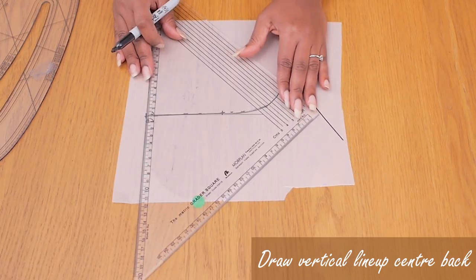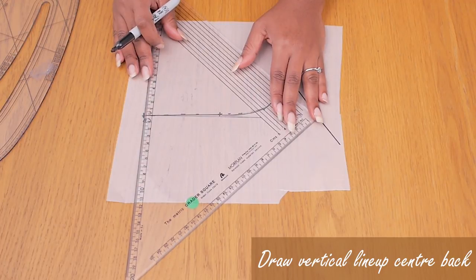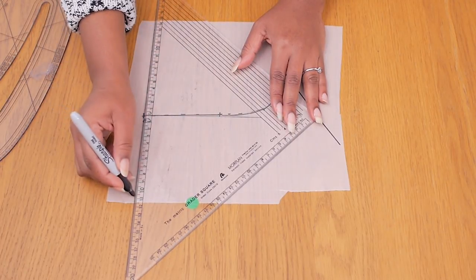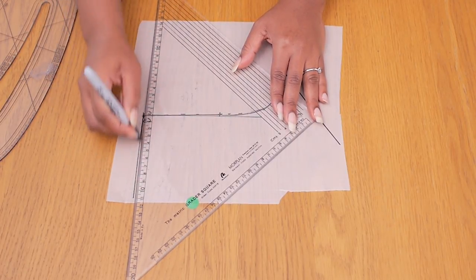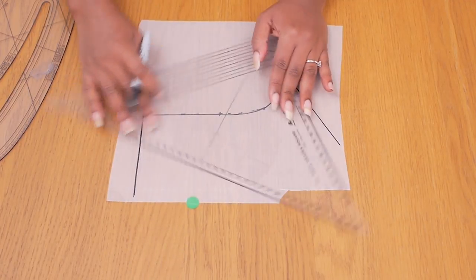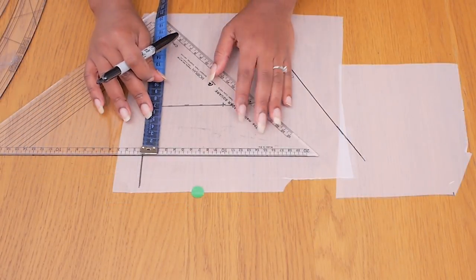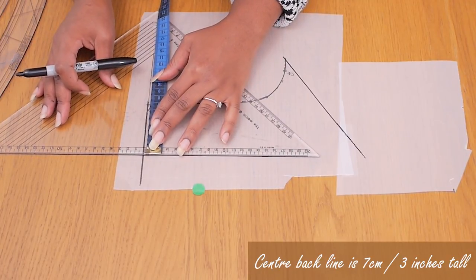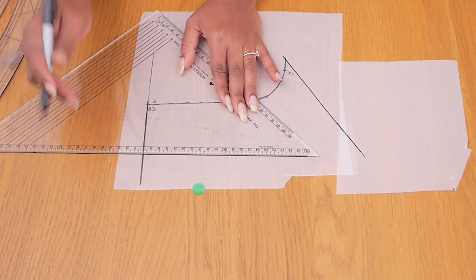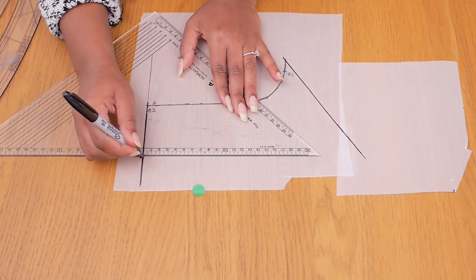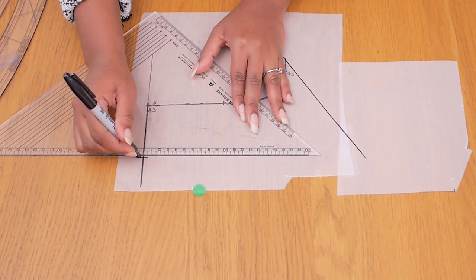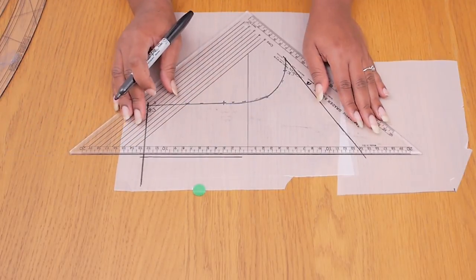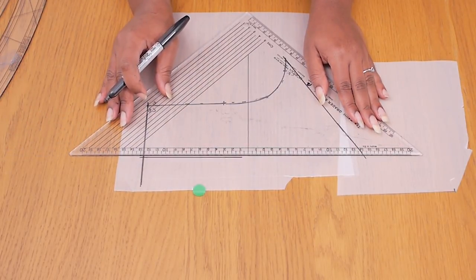It's about two centimeters from the center front as you can see. I'm going to be drawing a vertical line up the center back like so. So like I did earlier on, I added a bit of extra pattern paper for that side of the collar for it to work and the center back line that is vertical is seven centimeters or about three inches tall.